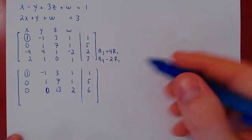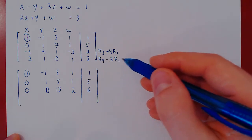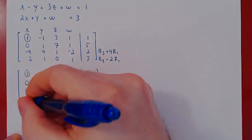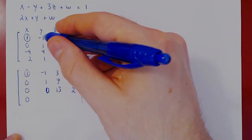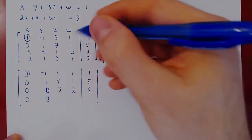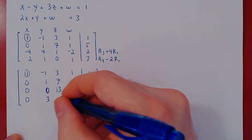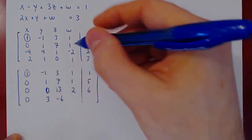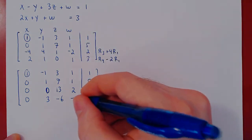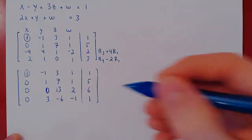Second row operation: row four minus two times row one. Two minus two: zero. One minus two times negative one — one plus two — three. Zero minus two times three — zero minus six — negative six. One minus two times one — one minus two — negative one. Three minus two times one — three minus two — one.